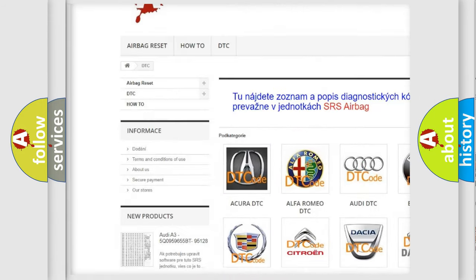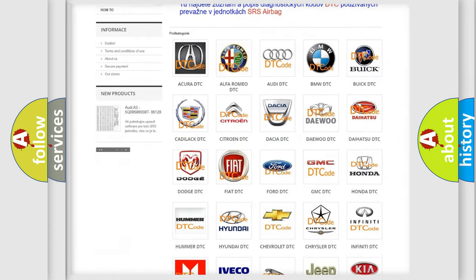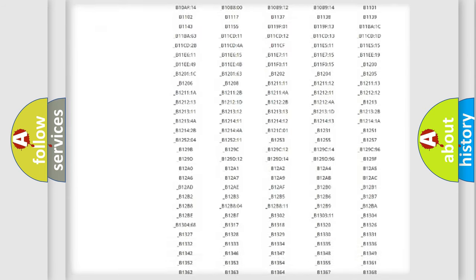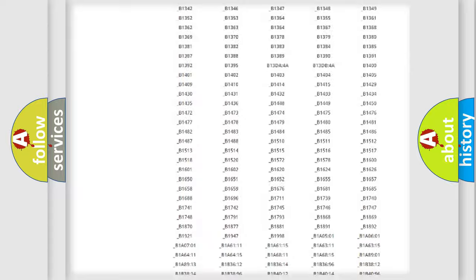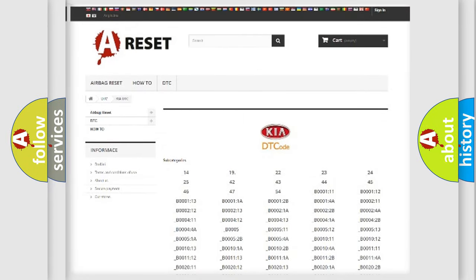Our website airbagreset.sk produces useful videos for you. You do not have to go through the OBD2 protocol anymore to know how to troubleshoot any car breakdown. You will find all the diagnostic codes that can be diagnosed in KIA vehicles, and many other useful things.